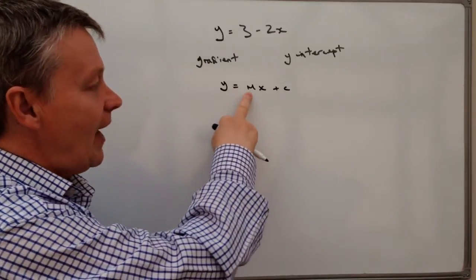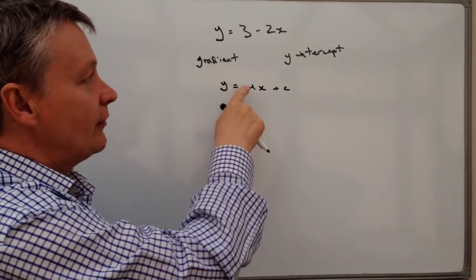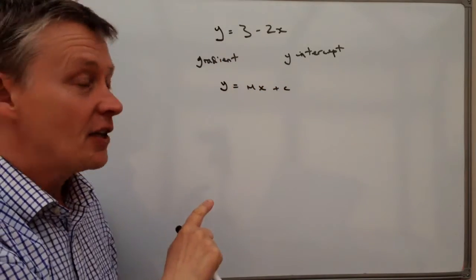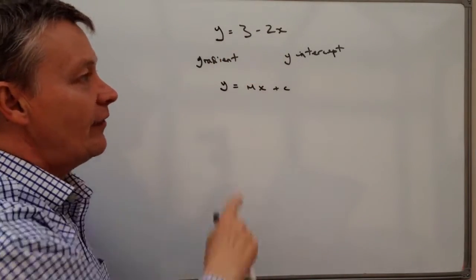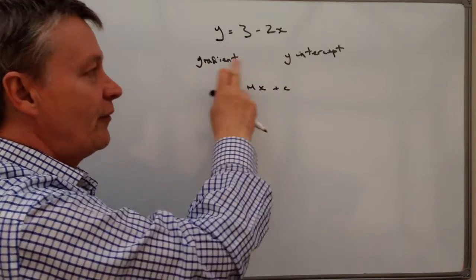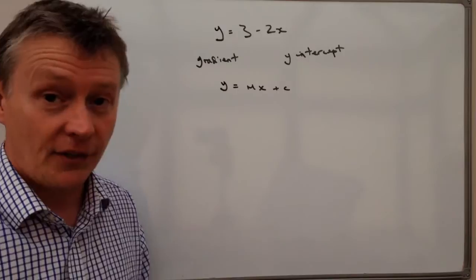Well the problem is, the value of m, which is the gradient value, is actually here, it needs to be at the beginning. So what we have to do is manipulate that equation in order to put it into this format in order to be able to answer the question.